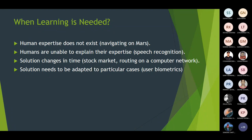Another interesting situation is stock market and routing on a computer network, where human expertise does not work because solutions are frequently changed over time. In such situations, machine learning applications or algorithms work much better than human expertise because solutions change frequently.